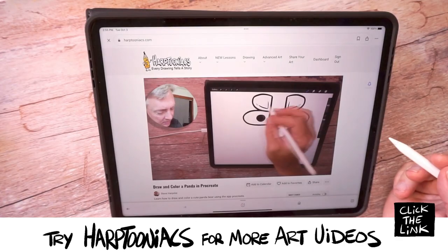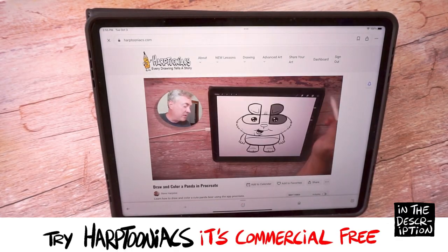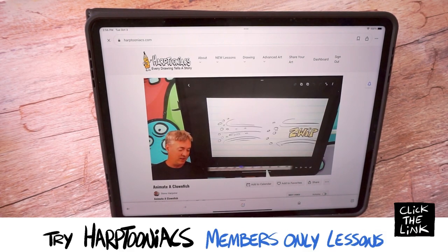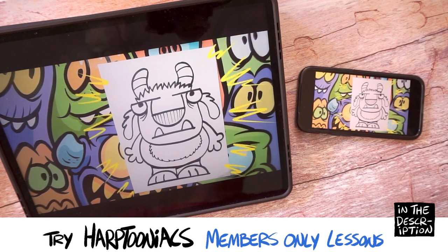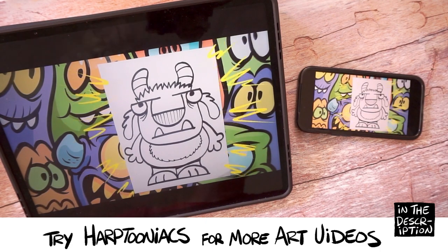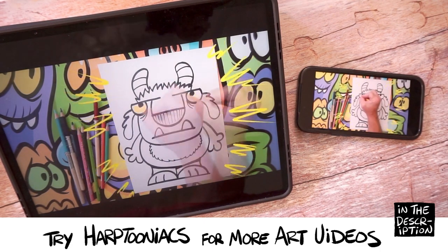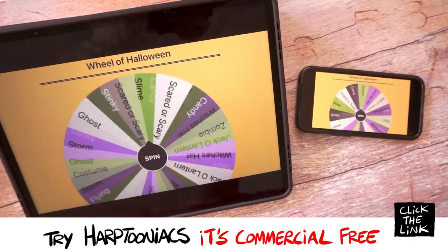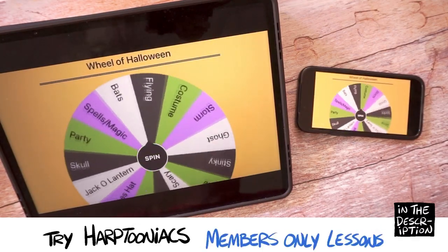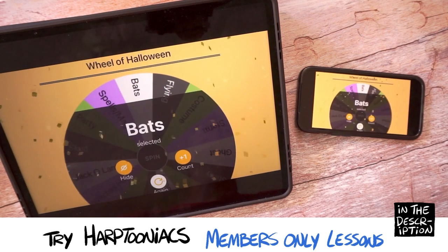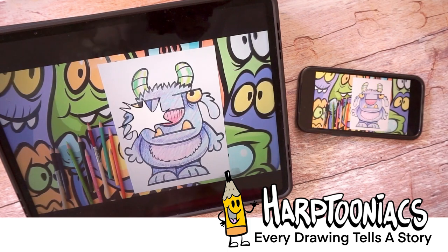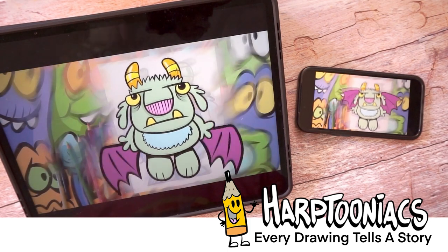Oh, and guess what? There's also digital art lessons and animation lessons that you can check out as well. Hey, so click the link below and try three free lessons. That's right, you get to try three free lessons to see what Harptooniacs is all about. And yes, you'll get to spin the picker wheel. So head on over there and I can't wait for you to check out Harptooniacs, where I believe every drawing tells a story.